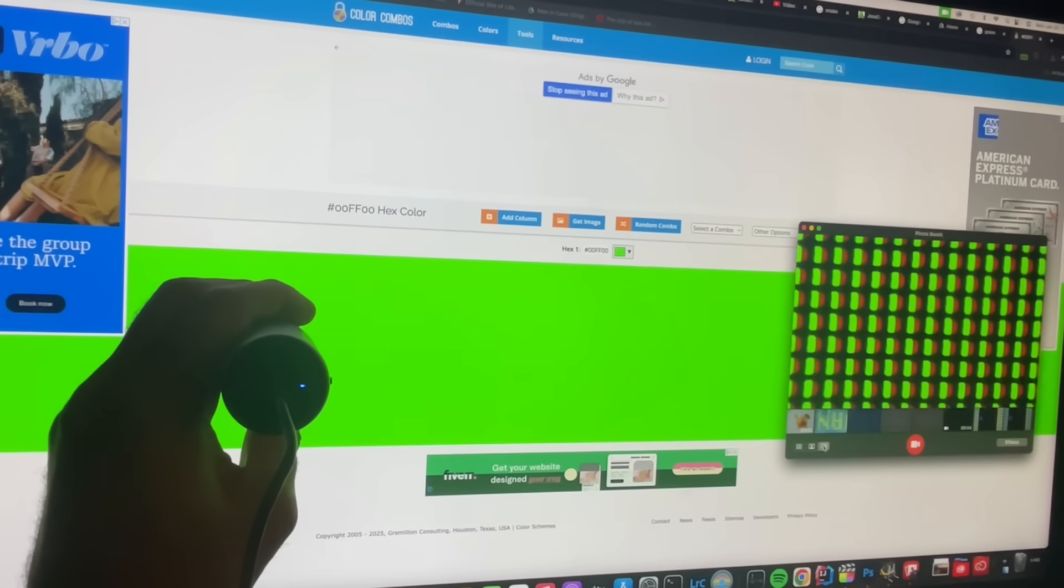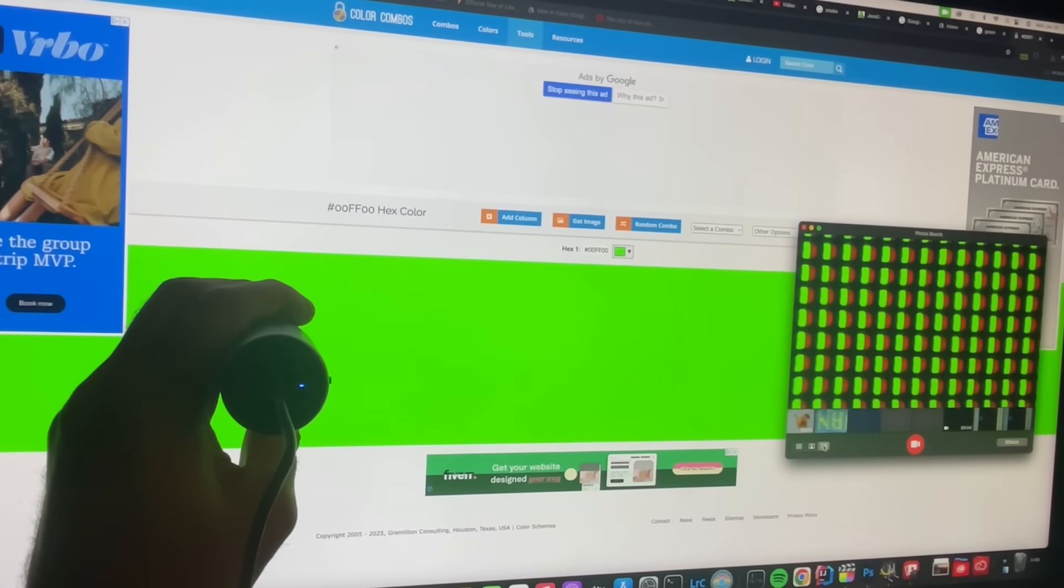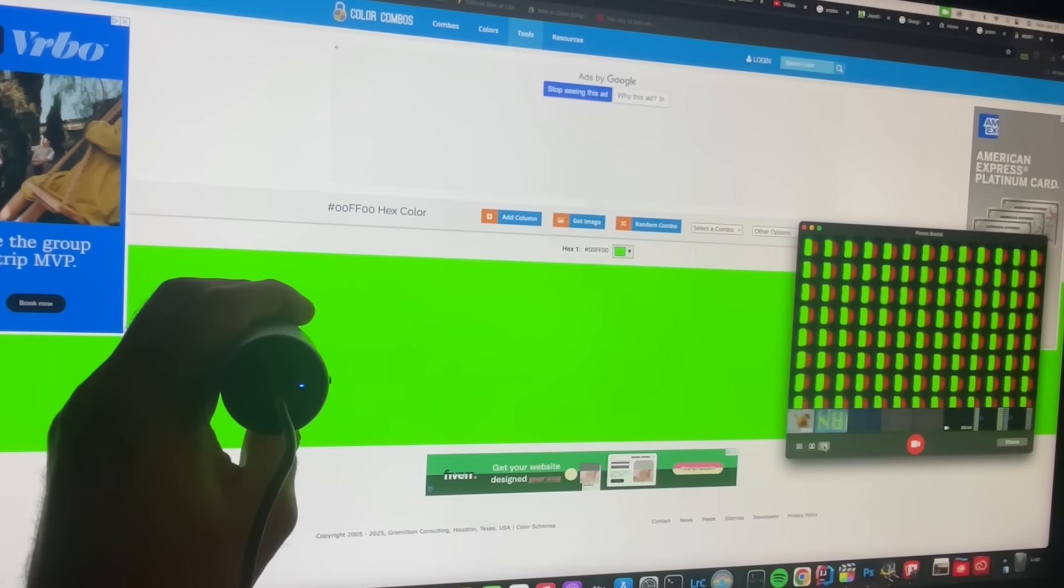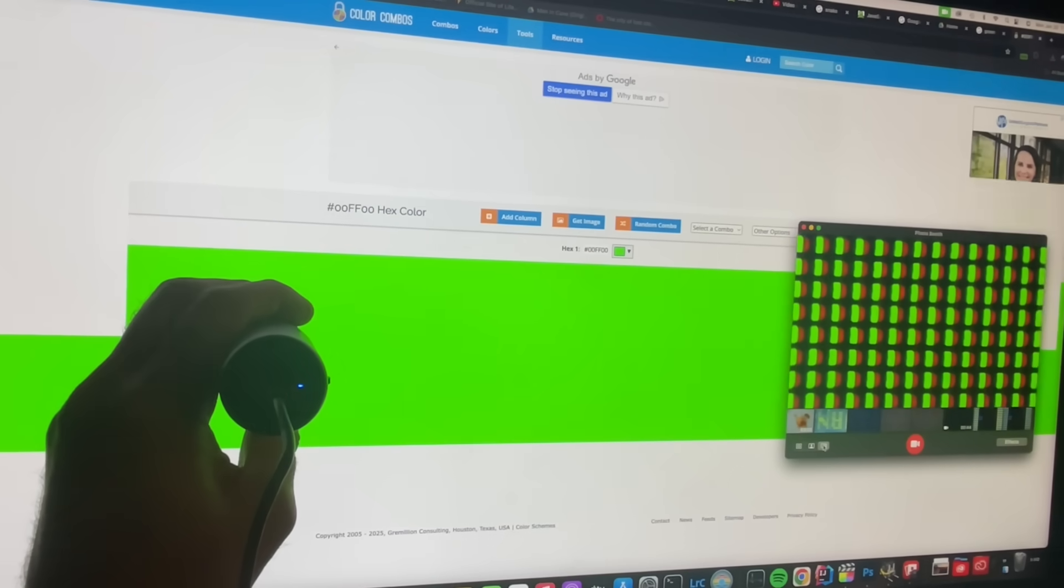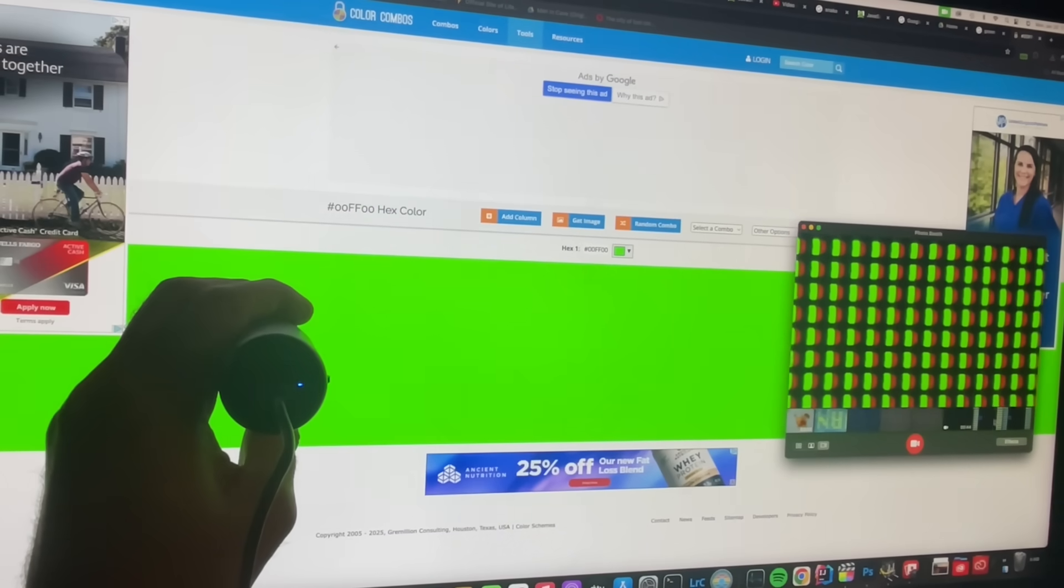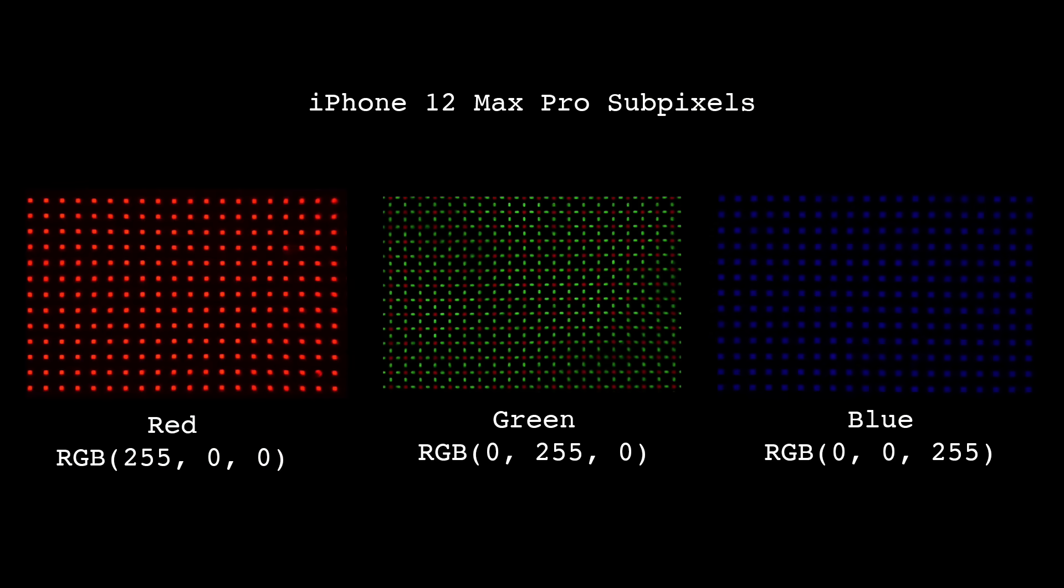I decided to see what solid green looked like under the microscope, and to my relief and confusion, in addition to the green light, the red and blue sub-pixels were also lighting up. I then checked my phone, and found that its green color also slightly lit up the red sub-pixel.